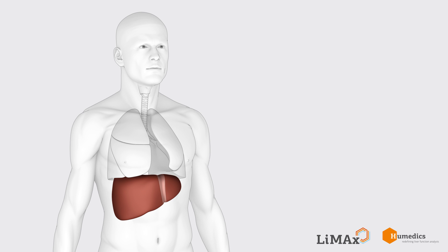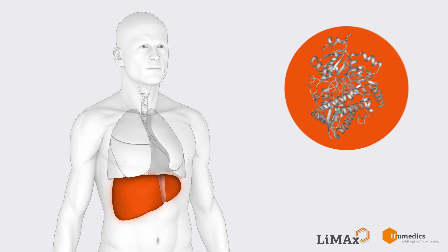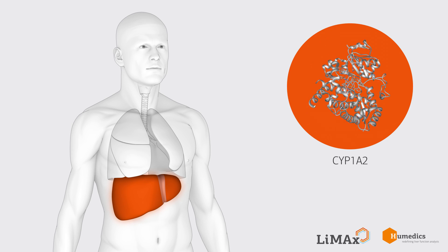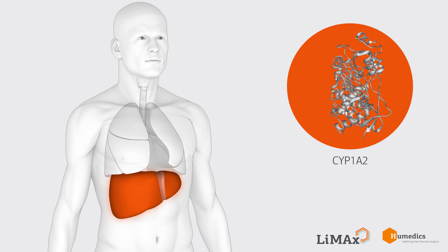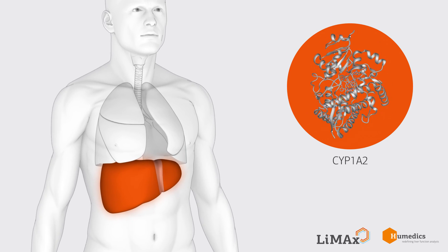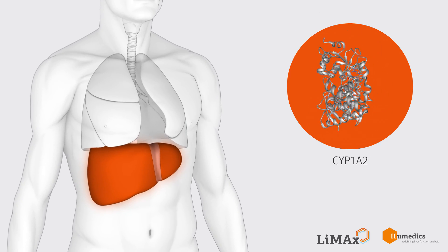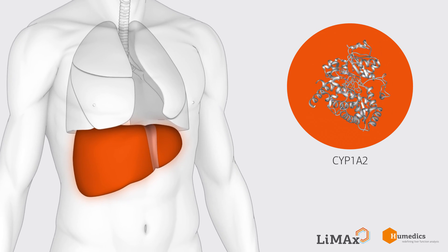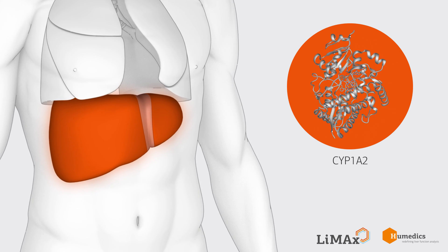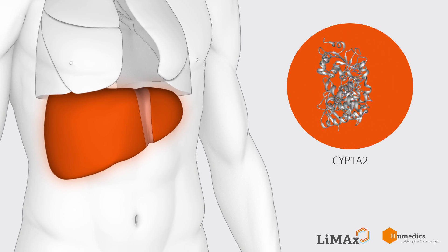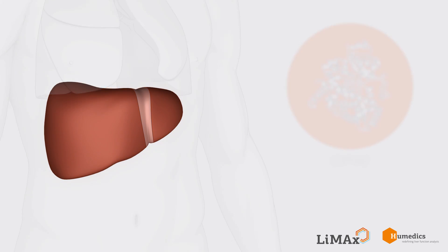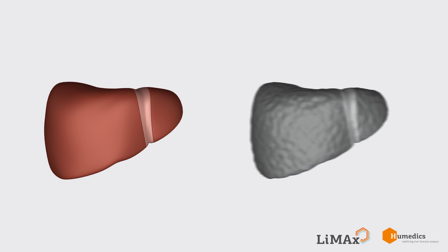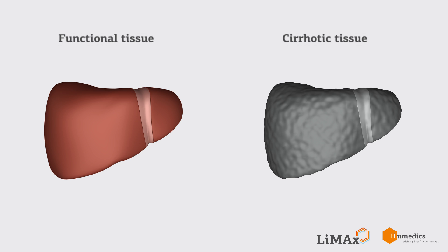LIMAX is a real-time test that is based on the activity of CYP1A2. CYP1A2 is uniformly distributed and exclusively expressed in hepatocytes throughout functional liver tissue. CYP1A2 is not expressed as frequently in diseased liver tissue.